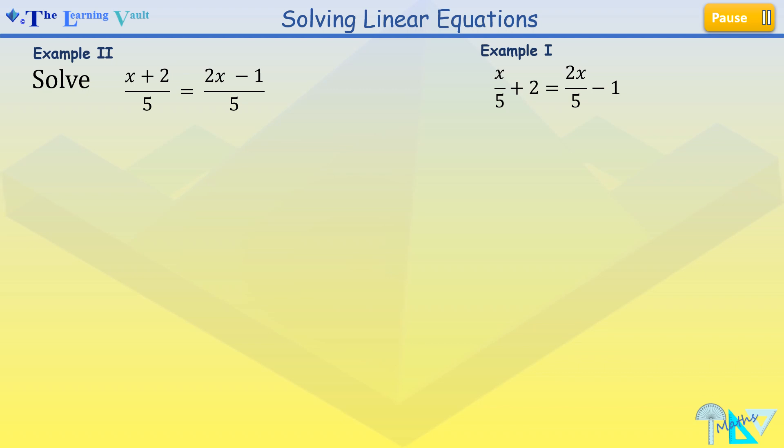They both have algebraic fractions. But with example 2, you'll notice there are 2 algebraic terms separated with an equal sign. In comparison to example 1 that has 4 terms, 2 algebraic fractions and 2 integers, plus 2 and negative 1.